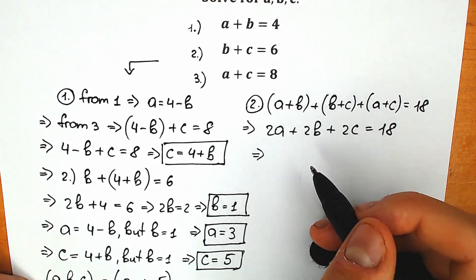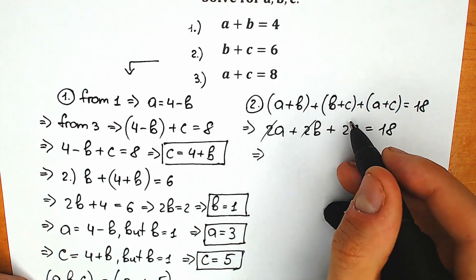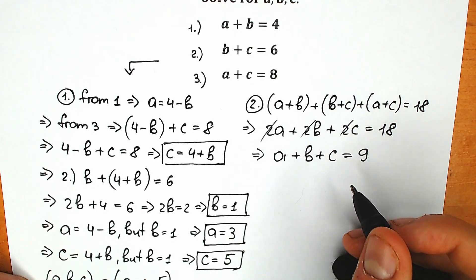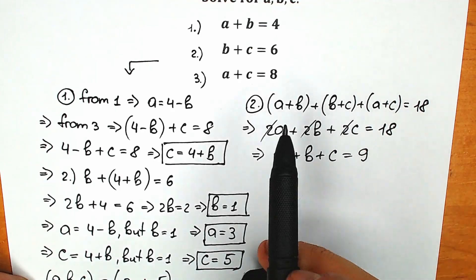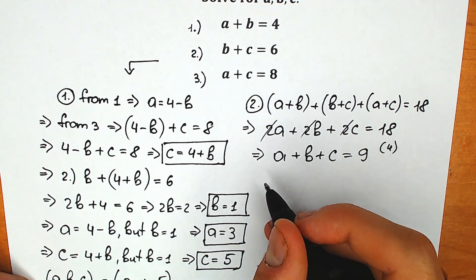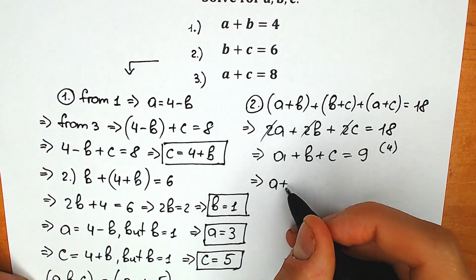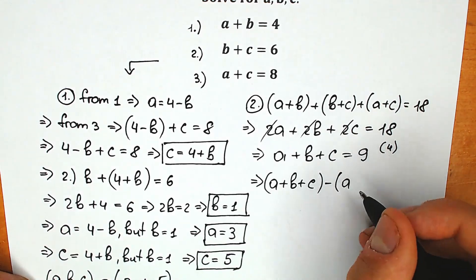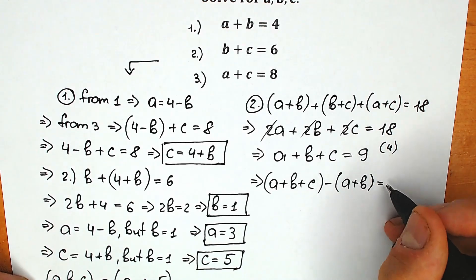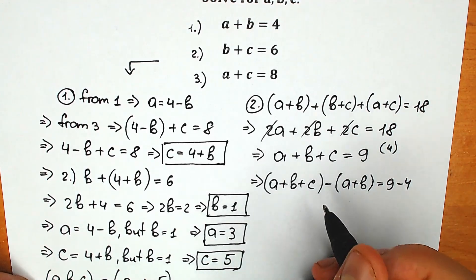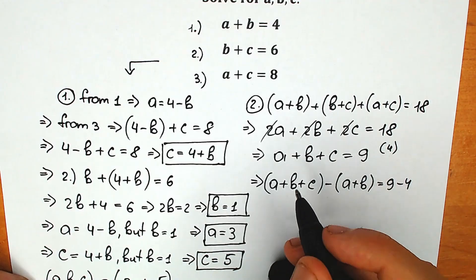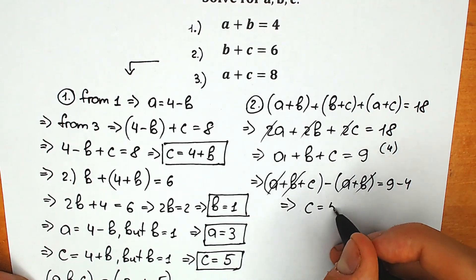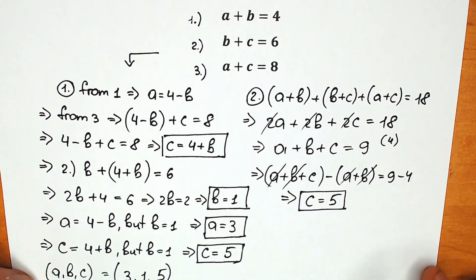Dividing by 2, we get a plus b plus c equals 9. Let's call this equation 4. Now subtract the first equation from equation 4: a plus b plus c minus (a plus b) equals 9 minus 4. The a and b cancel, leaving c equals 5. We can get this result in just a few seconds with this method.